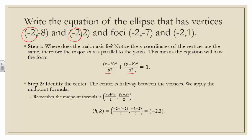Next, we must identify the center. The center is halfway between the vertices, so we apply the midpoint formula: first x-coordinate plus second all over 2, first y-coordinate plus second all over 2. Looking at our two vertices, negative 2 comma negative 8 and negative 2 comma 2: the x values give us negative 2 plus negative 2 all over 2, and the y values give us negative 8 plus 2 all over 2, which simplifies to the center negative 2 comma negative 3. That is our h, k.